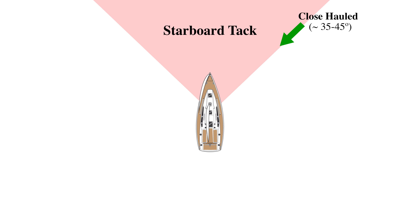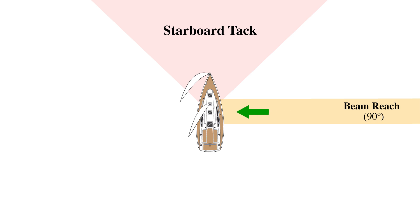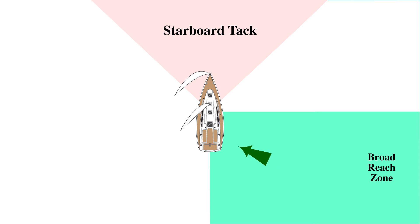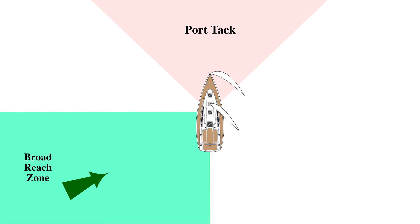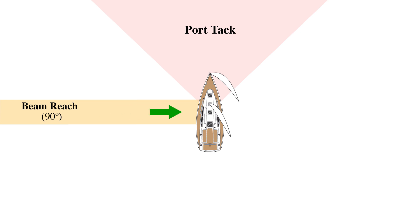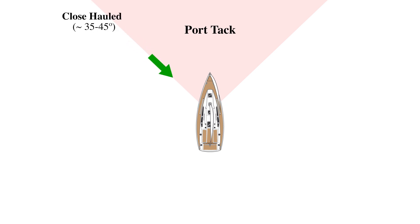So now let's go back and go through all the points of sail one after the other. Note the position of the sails — as the wind swings around to the stern, the sails are progressively eased out. We'll start at the top with close-hauled on the starboard tack, followed by a close reach, a beam reach, a broad reach, and finally a run. As we go up the other side on the port tack, notice that the sails are progressively sheeted in, as we go from a broad reach, to a beam reach, to a close reach, and finally to close-hauled, which is as close as the boat can sail to the wind.